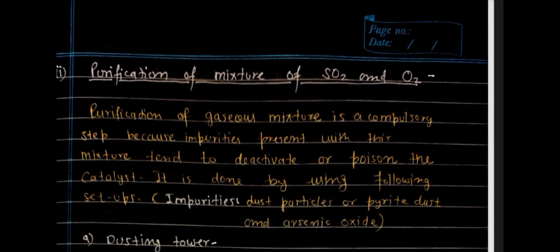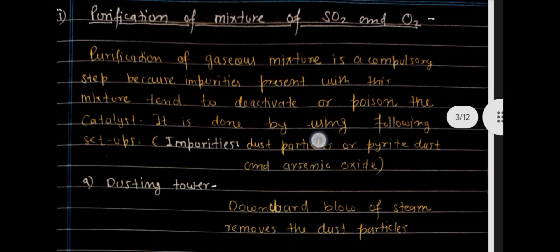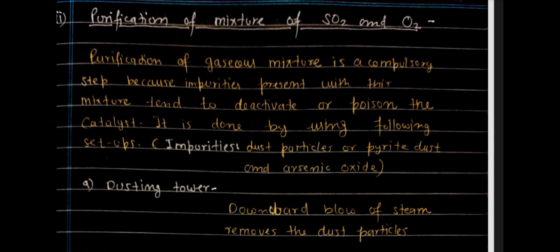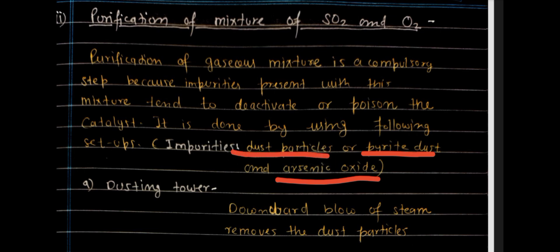Step 2 is purification of the mixture of SO₂ and O₂. There are several sub-steps. Impurities such as pyrite dust, arsenic oxide, and dust particles must be removed, as they will poison the catalyst and decrease its efficiency.